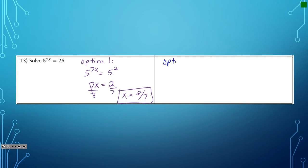Option two would be to rewrite this in logarithmic form. So I would have log base 5 of 25 equals 7x.